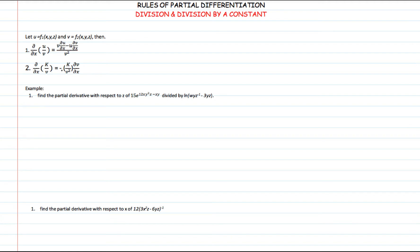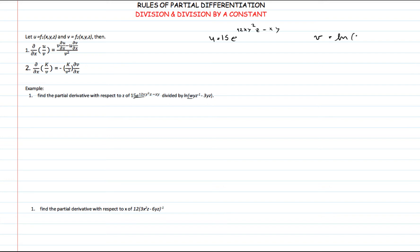In order for us to understand that, we can solve this first example. You just have to remember that whenever we have v or u, it means we have to keep that function as constant. In example one, we have an exponential function and a rational function. We have to identify which one is u and which one is v. Our u, the numerator, is 15e raised to 12xy² · z minus xy. And our v, obviously, will be the natural log of w.